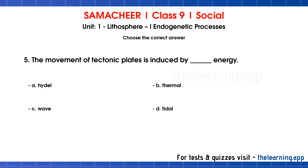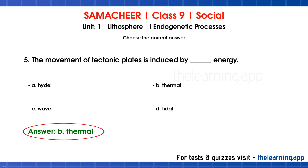Fifth question — the movement of tectonic plates is induced by dash energy. Options: A hydel, B thermal, C wave, D tidal. Correct answer is option B: thermal energy. The thermal energy from within the earth causes the plates to move. When these plates collide with one another, mountain ranges are formed.